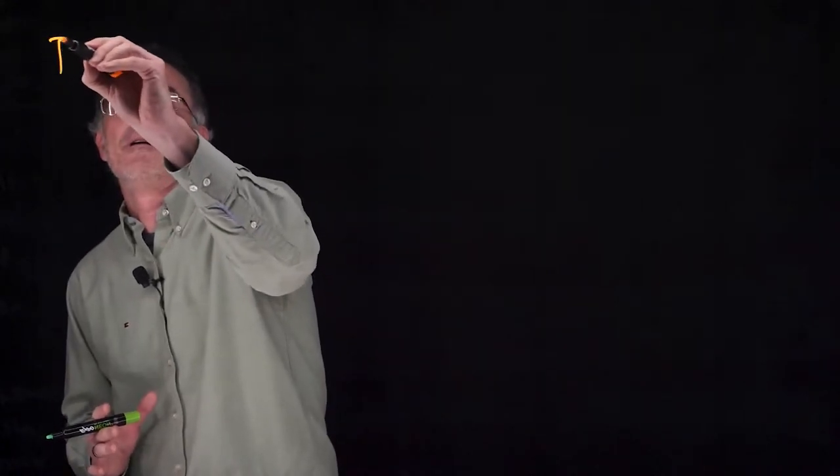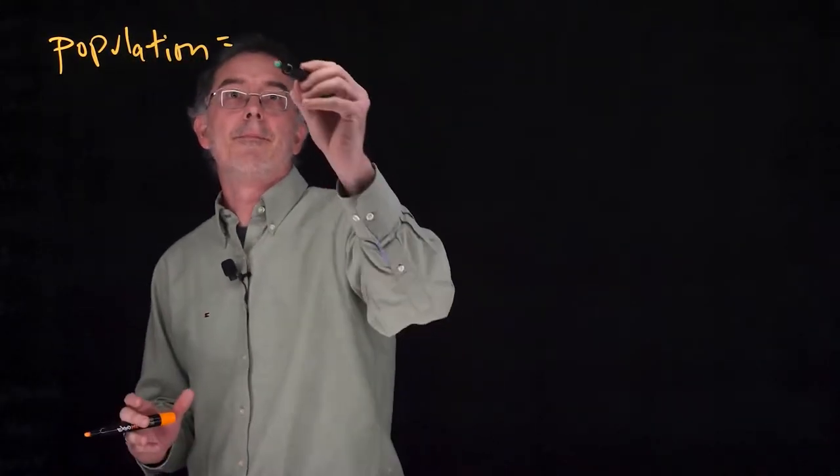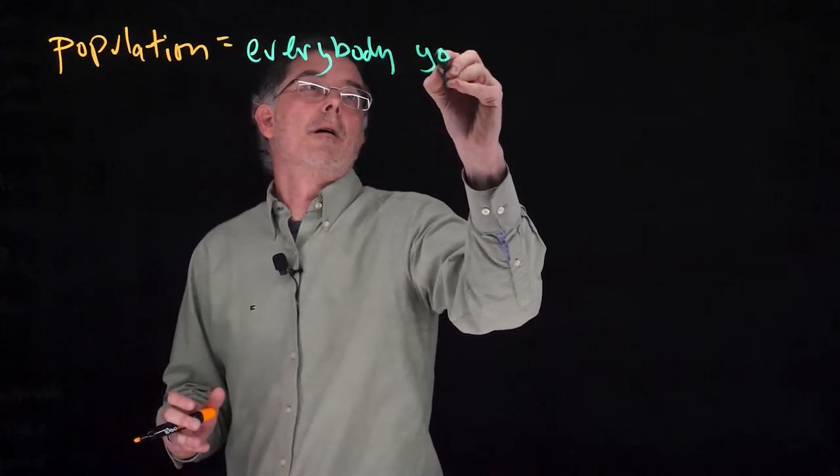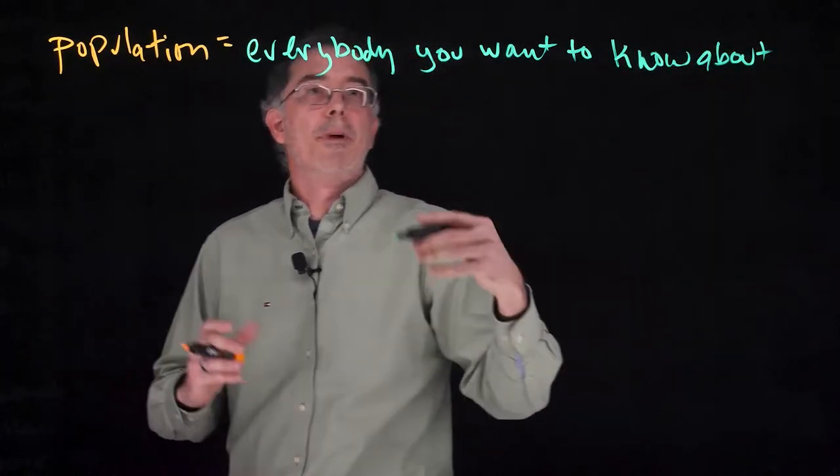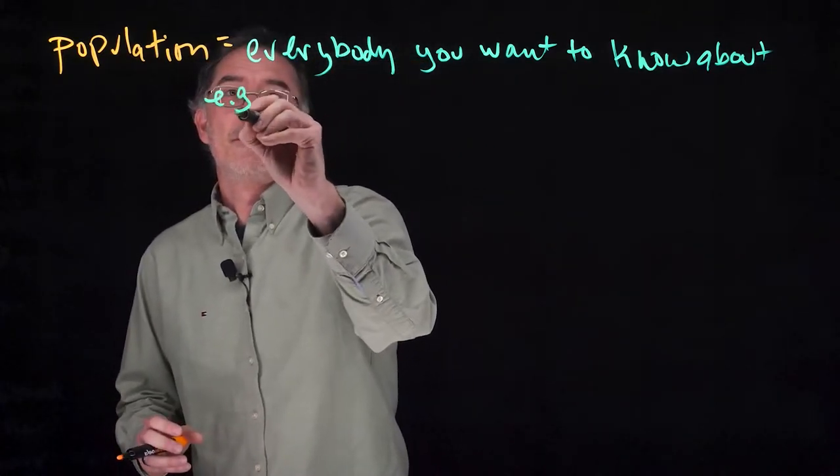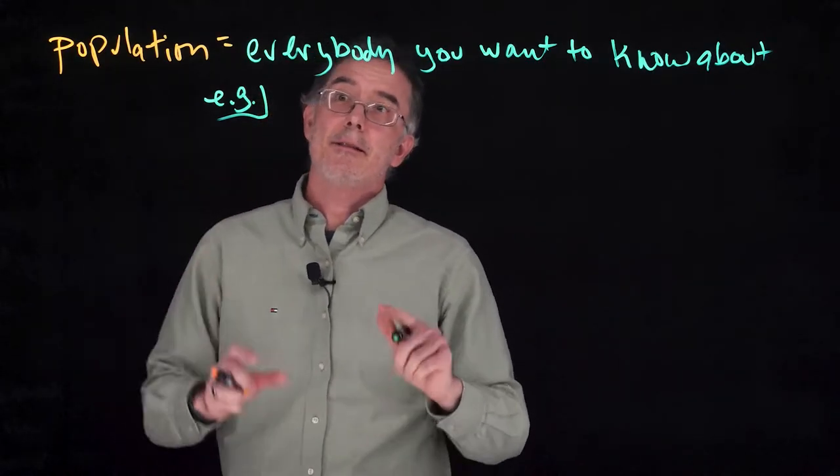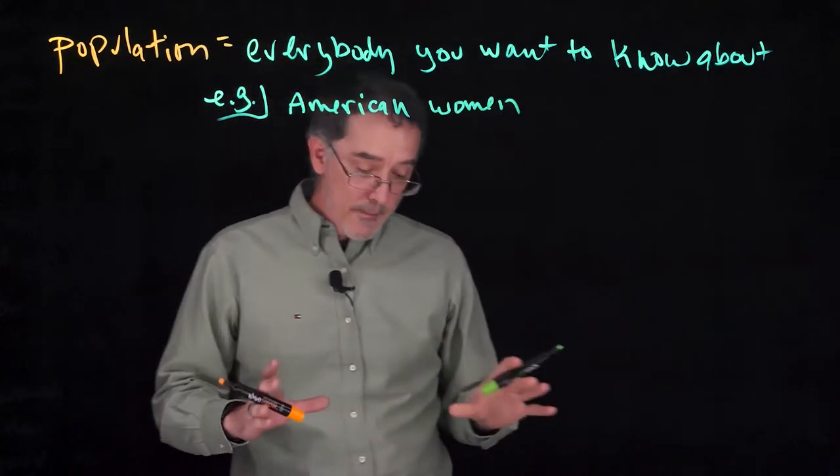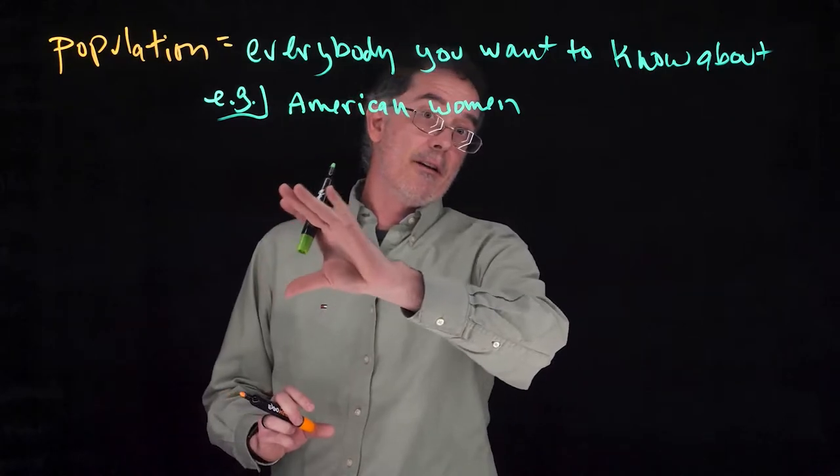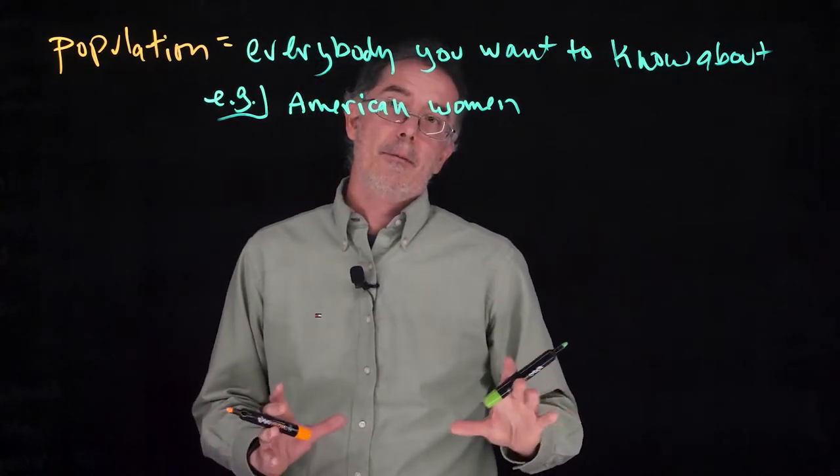Two critical ideas in statistics are a population and a sample. A population is everybody you want to know about or make a claim about. For example, I might want to know the average height of American women. In that case, the population is American women. If somehow I have a way to measure the height of every American woman, I would have done a census, just like the government does a census every few years. They're measuring everybody in the population.